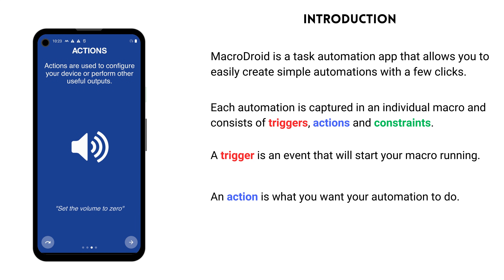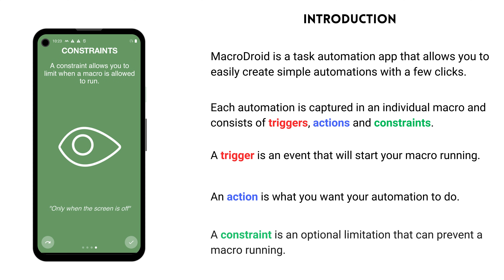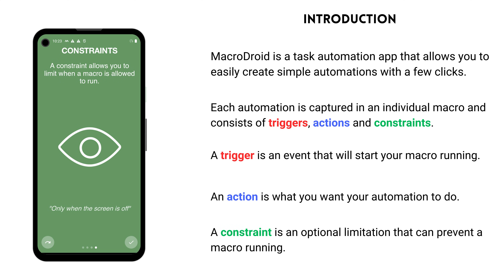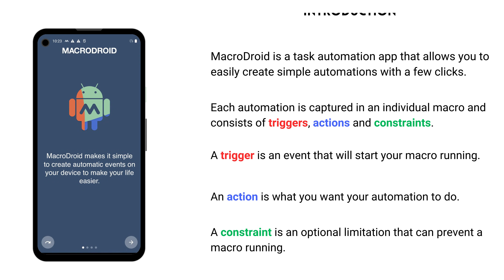An action is what you want your automation to do. For example, you could set the notification or ring volume to zero. A constraint is an optional limitation that can prevent a macro running. For example, you could constrain a macro so it will only work when the screen is off.